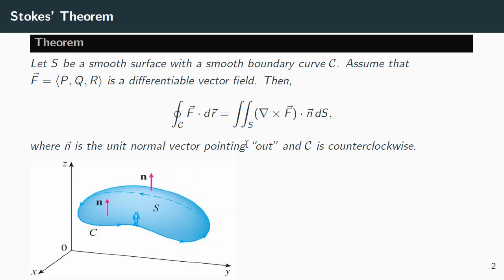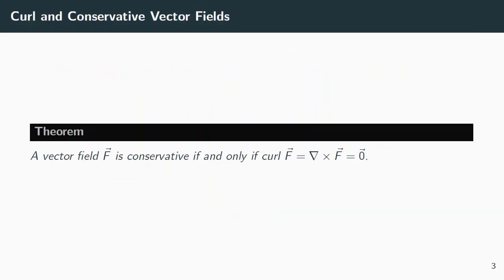Just one last tiny little item here, curl and conservative vector fields. We've been talking about conservative vector fields. That's one which has a potential function. We learned before that if you had a potential function and a conservative vector field, then the curl was zero. It's actually if and only if. If the curl is zero, it's guaranteed to be conservative. If it's conservative, it's guaranteed to have a curl of the zero vector. So those things go if and only if, which is kind of a nice thing.